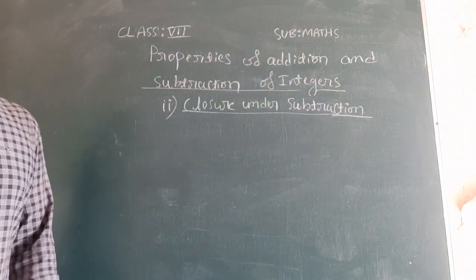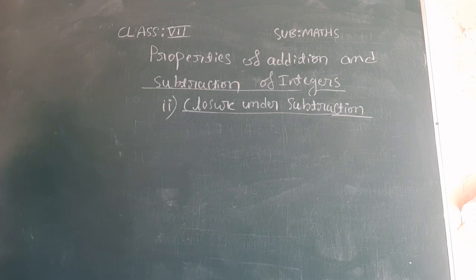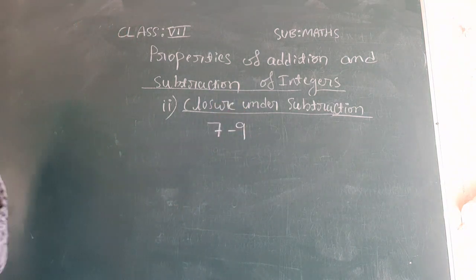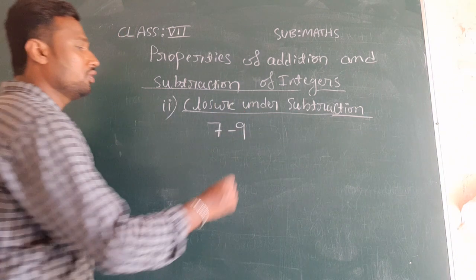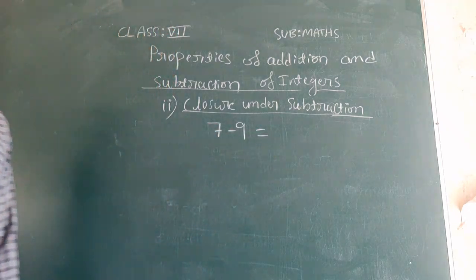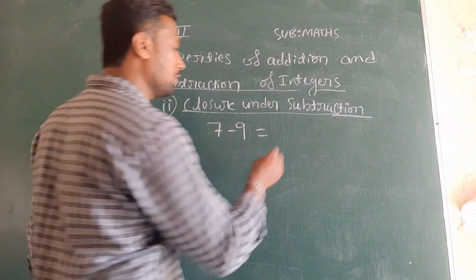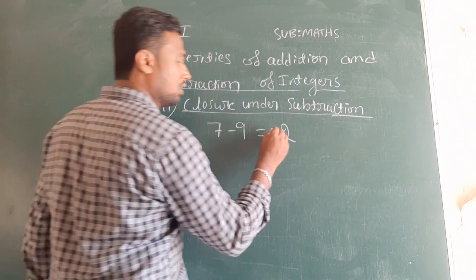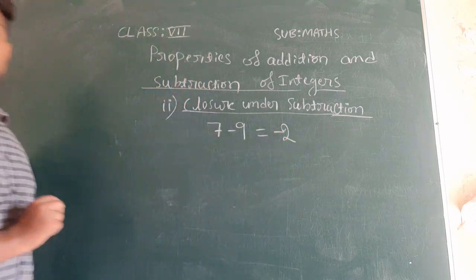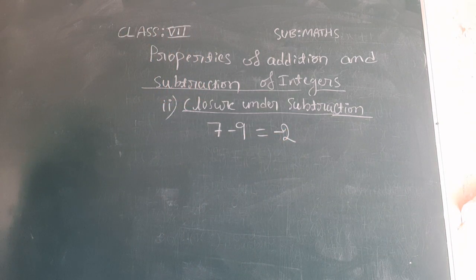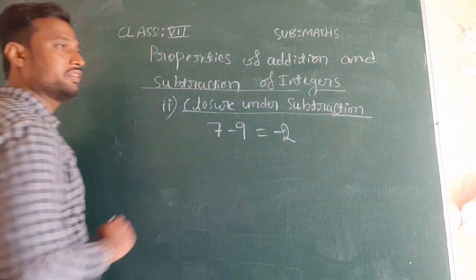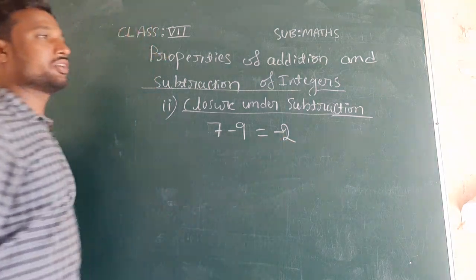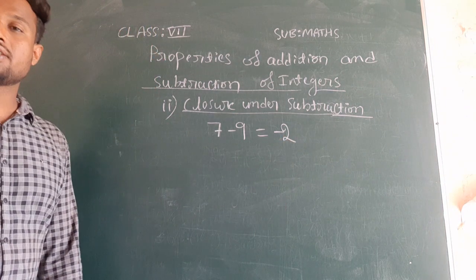I will consider any two integers again. For example, 7 minus 9. The answer: plus into minus is minus, so 9 minus 7 equals 2, and the sign in front of the bigger value is minus. Therefore we get minus 2. You can see that 7 is a positive integer and 9 is also an integer, and the answer minus 2 is also an integer only.